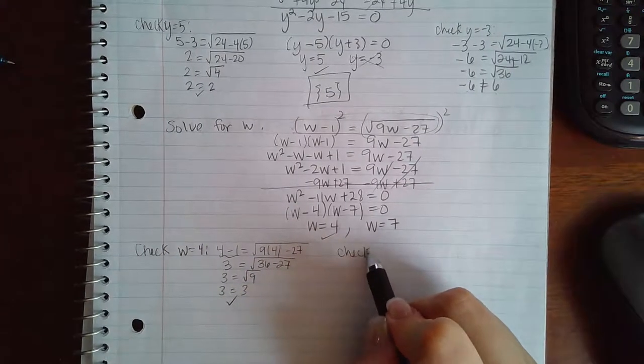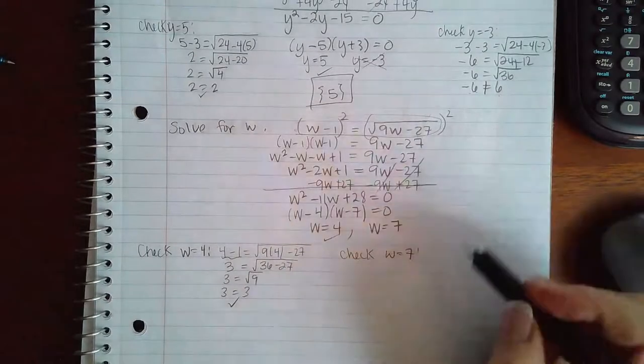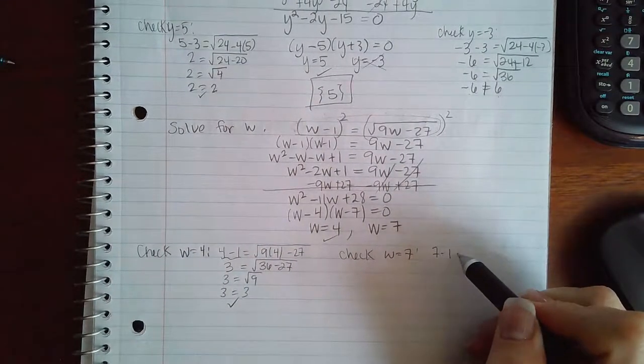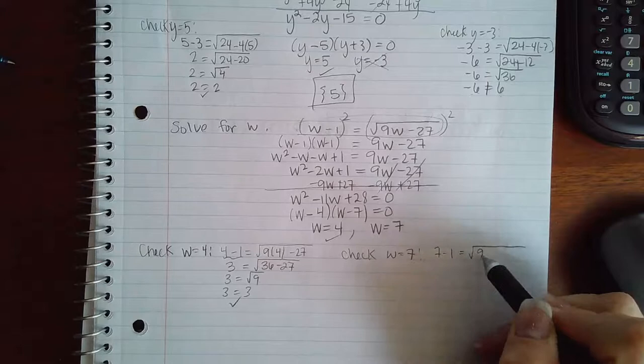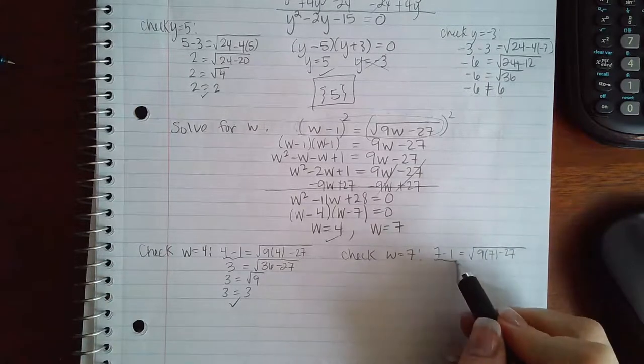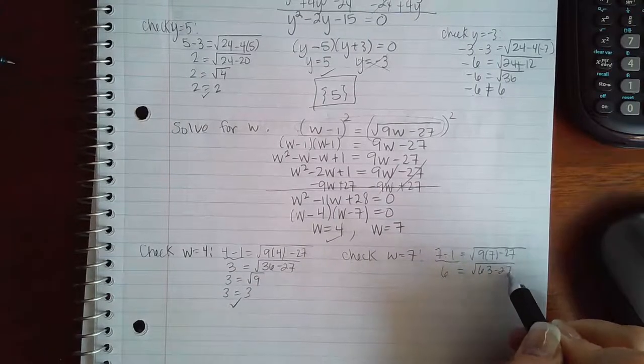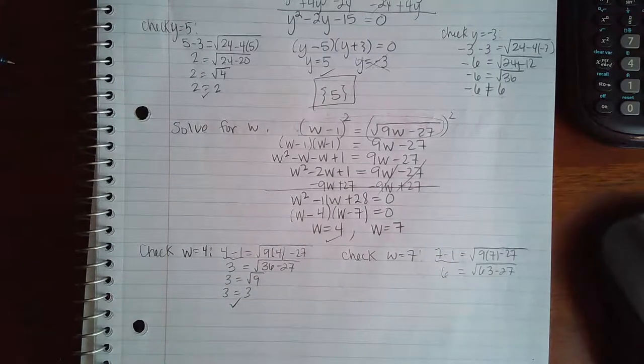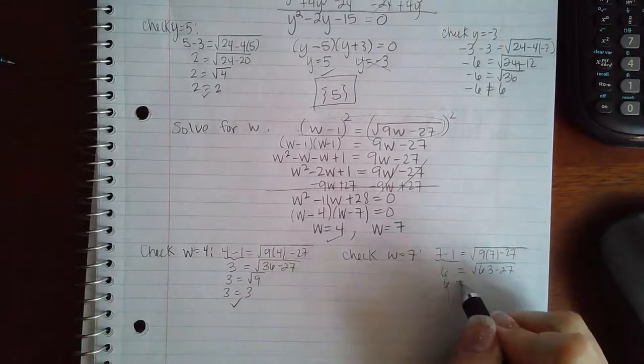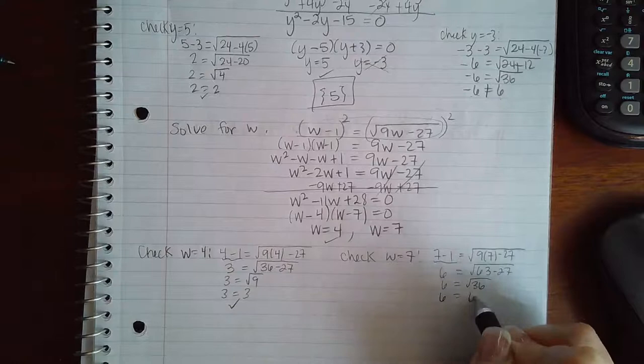Now I'm going to check w equal to 7. So plugging it into here, 7 minus 1 equal to the square root of 9 times 7 minus 27. So here I get 6. Here I get 63 minus 27, which is the square root of 36. And the square root of 36 is 6.